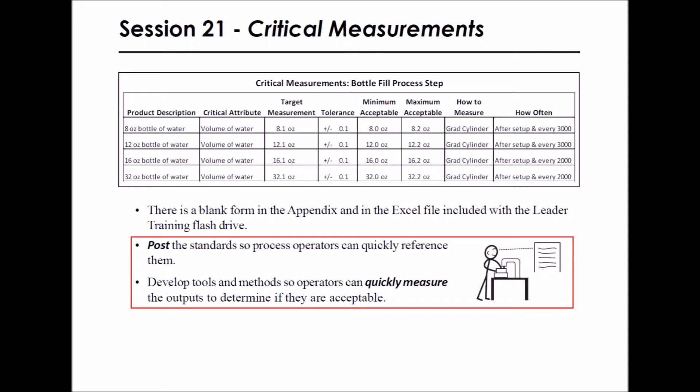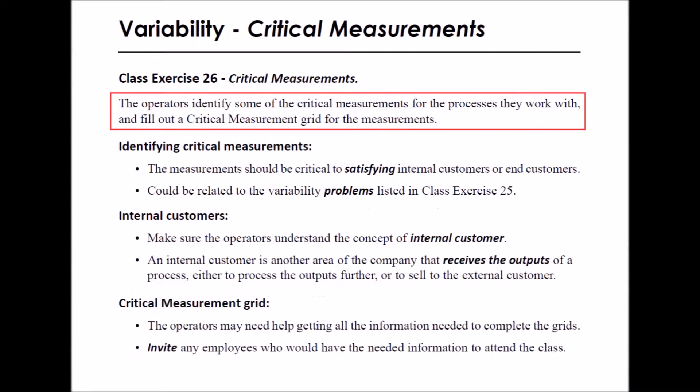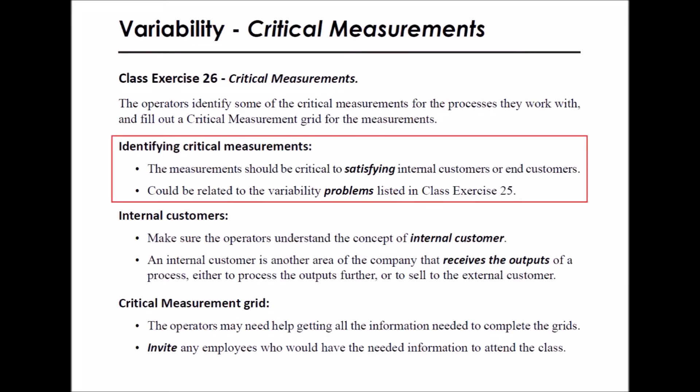Develop tools and processes so operators can quickly measure outputs to determine if they are acceptable. Go/no-go gauges can be a foolproof way to quickly measure the acceptability of outputs. In Class Exercise 26, the operators identify some of the critical measurements for the processes they work with and fill out a critical measurement grid. The measurements should be critical to satisfying internal or end customers, and could be related to the variability problems listed in Class Exercise 25.